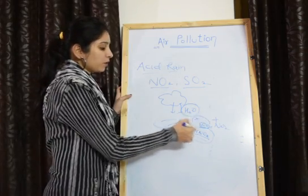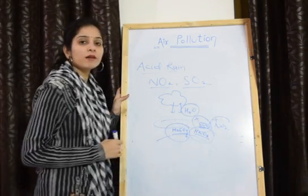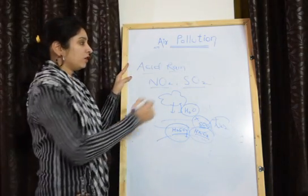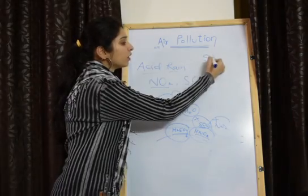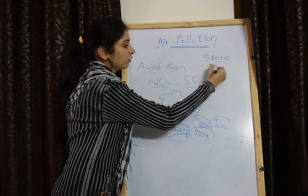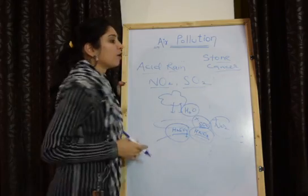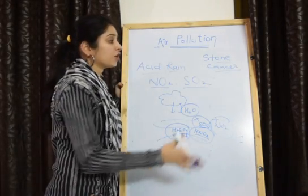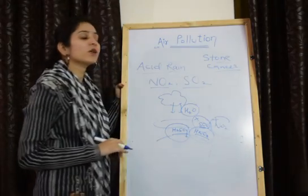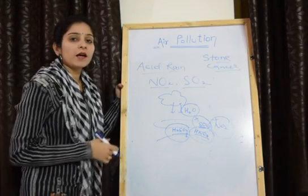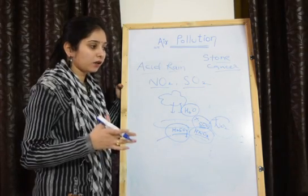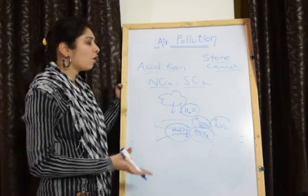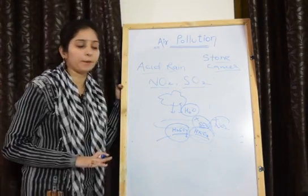The gases responsible for acid rain are SO₂ and NO₂. Due to acid rain, some disease on stone occurs which is called stone cancer. The yellow color occurs on white marbles — the white marble changes to yellow color, that is called stone cancer. Sometimes corrosion also occurs in some metallic bodies. All these occur due to acid rain.